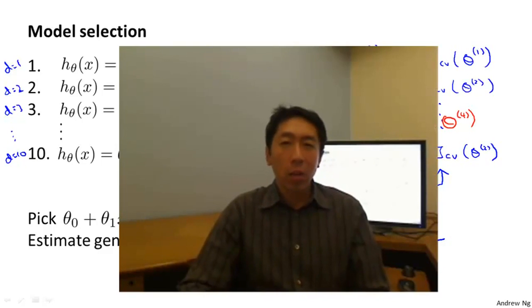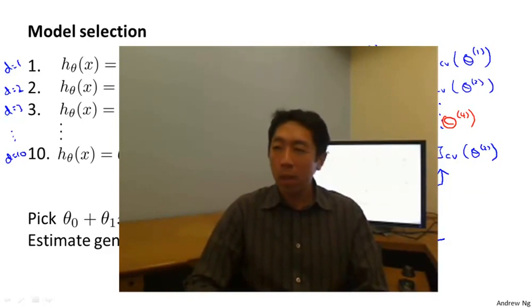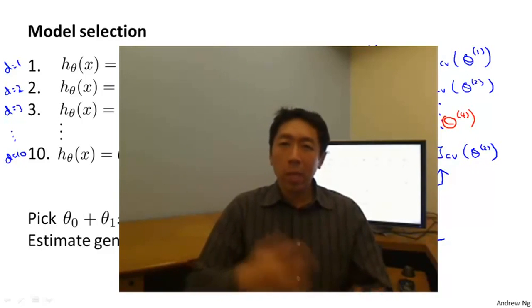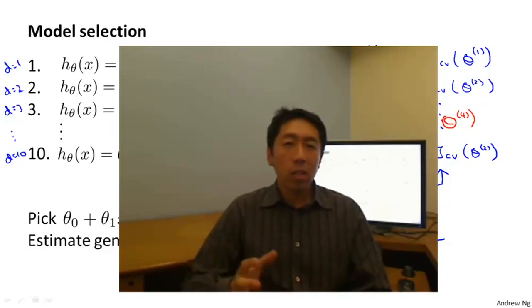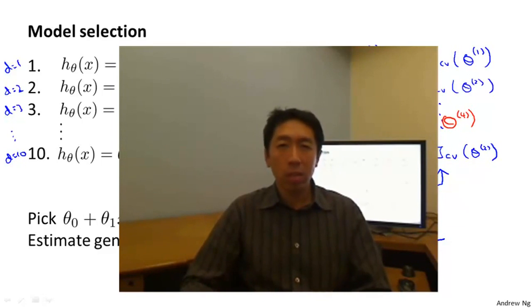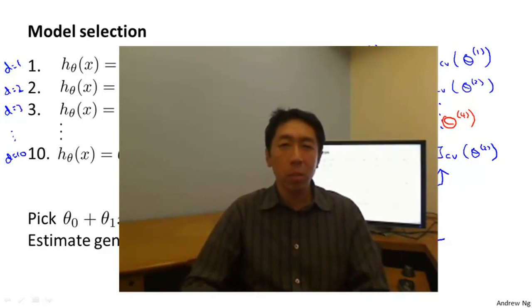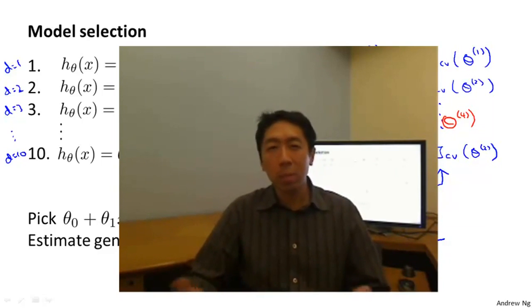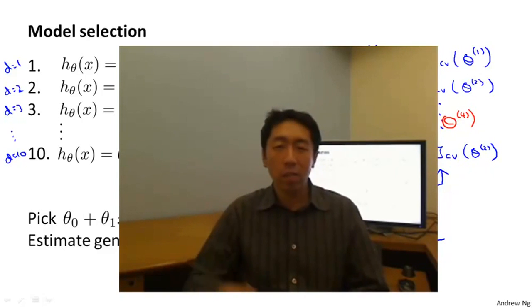So that was model selection — how to take your data, split it into train, validation, and test sets, use your cross validation data to select the model, and evaluate it on the test set. One final note: in machine learning as practiced today, many people still select the model using the test set and then report error on that same test set as though it were a good estimate of generalization error. If you have a massive test set it's maybe not terrible, but most practitioners advise against it. It is considered better practice to have separate train, validation, and test sets.